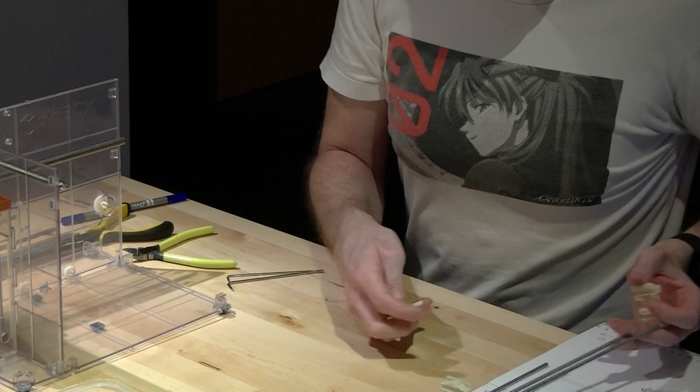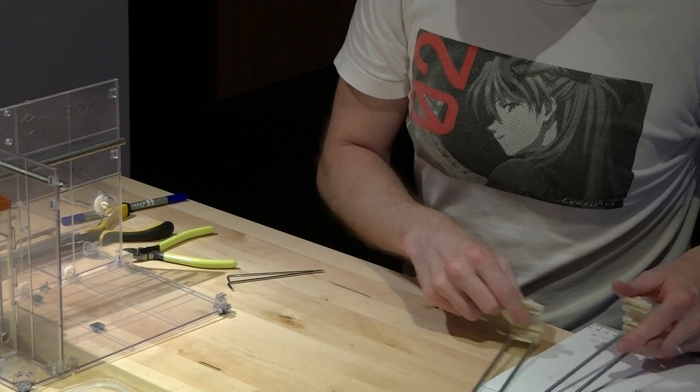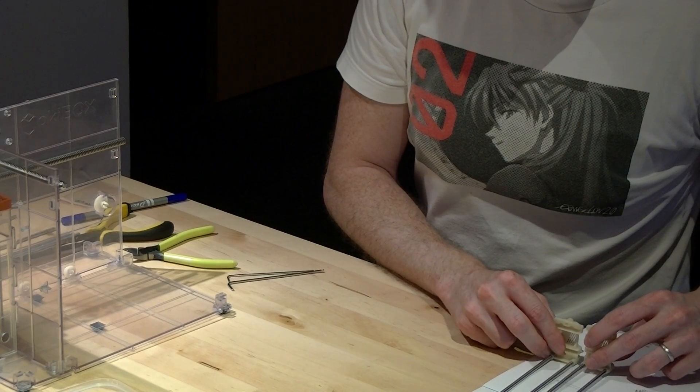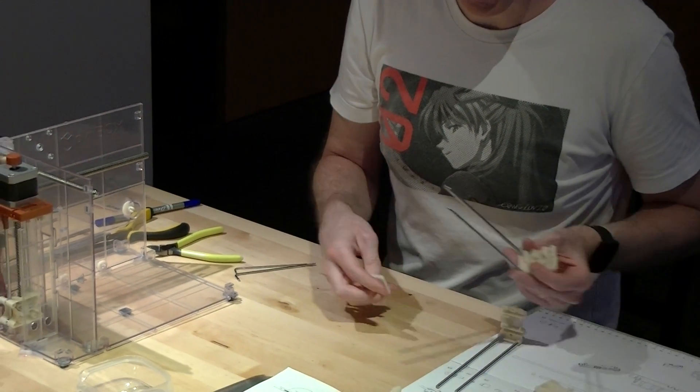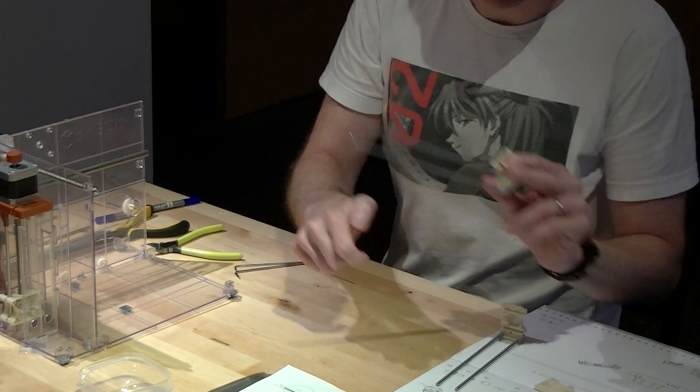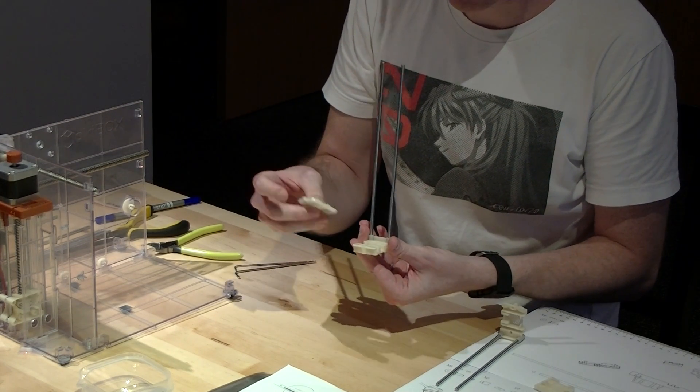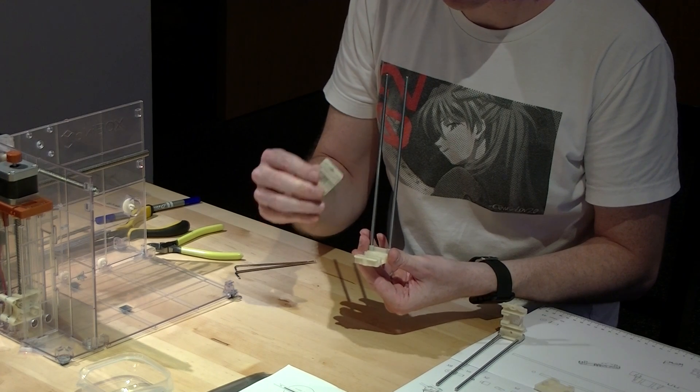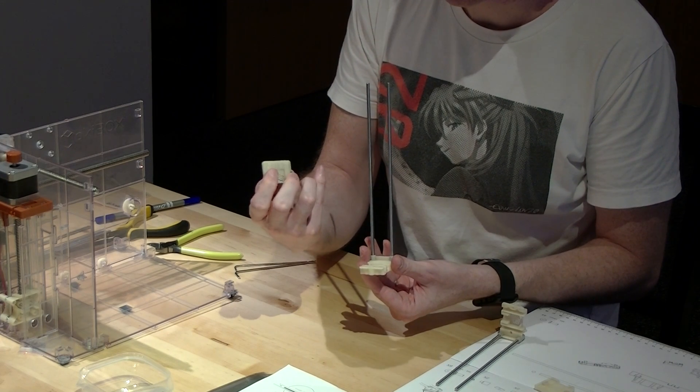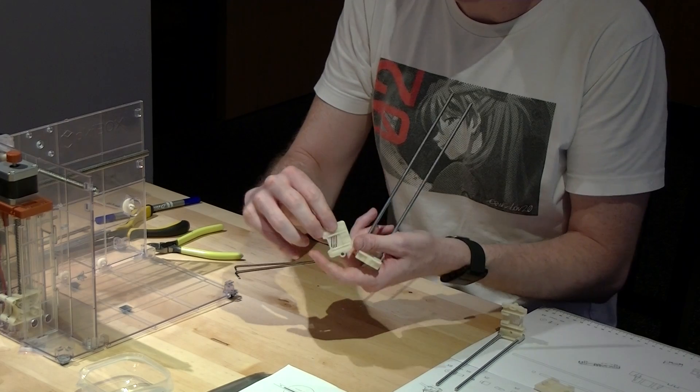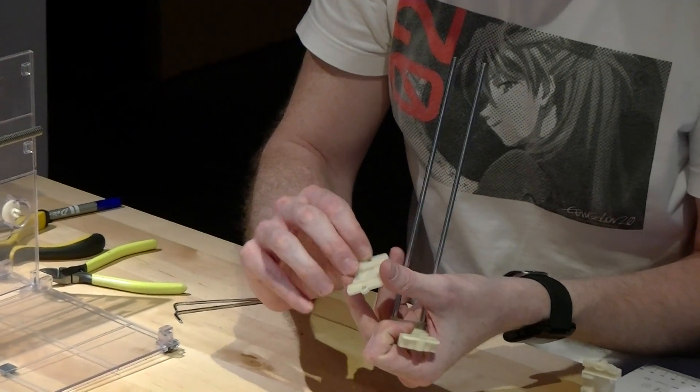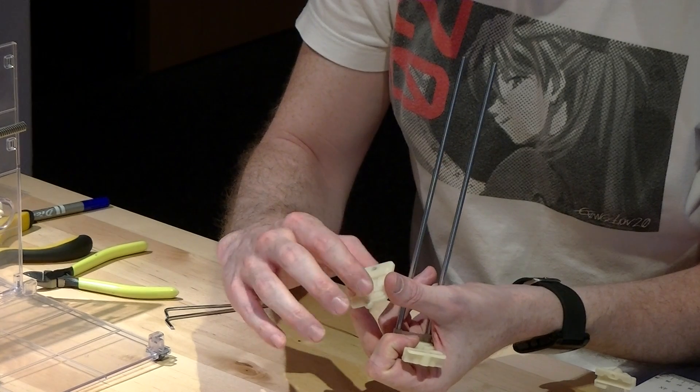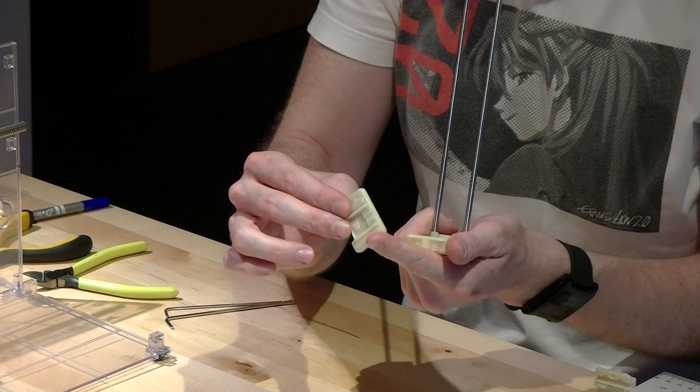So, first step. It doesn't really matter so much which one you do, but step A on the instruction manual is the longer one. So, what you'll see is on these plates, there's one feature that has two little bumps. And then, there's the bottom that has the little bit sticking down.